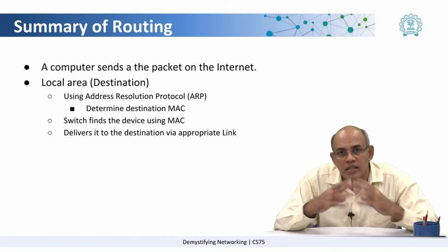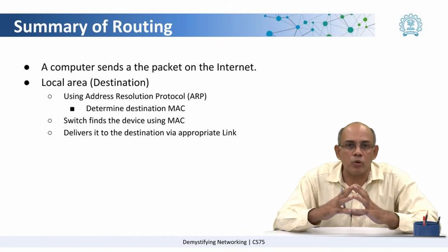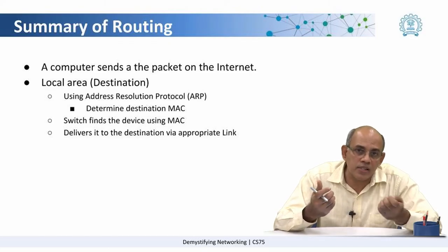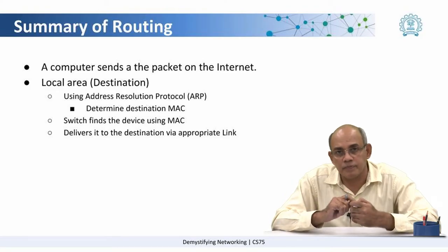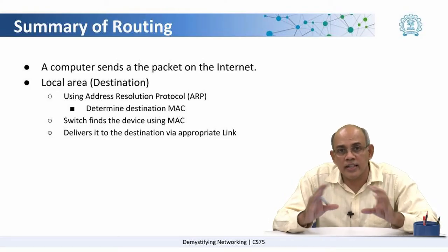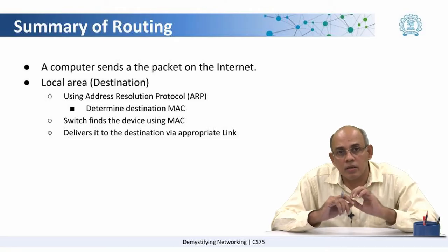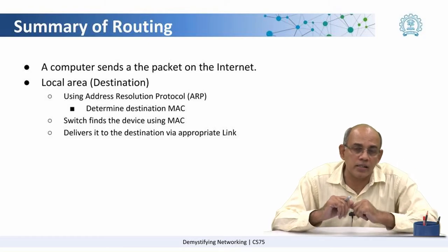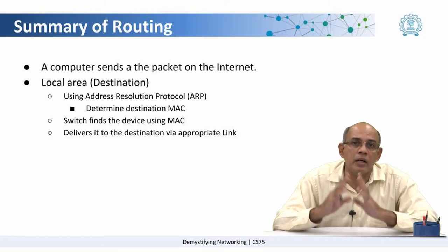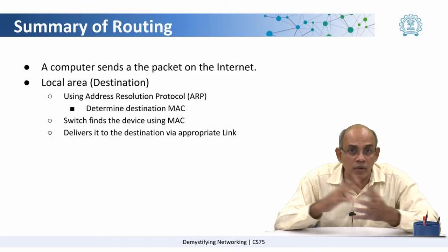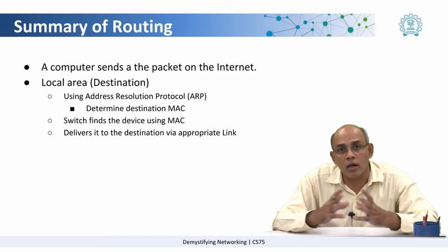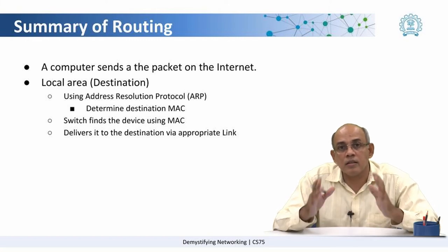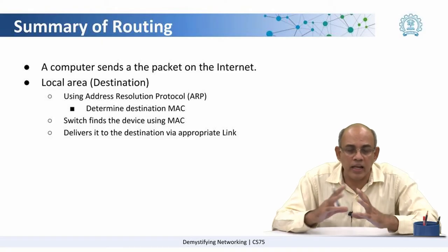Now after it reaches here, once again the local network takes over, where the switch sees that here is a packet which is coming in for a particular IP address destination. The switch then determines which is the computer associated with this IP address, finds out the corresponding MAC address, and delivers the packet along that interface. The switch uses a protocol called the Address Resolution Protocol in order to determine which is the machine to which the packet has to be delivered.